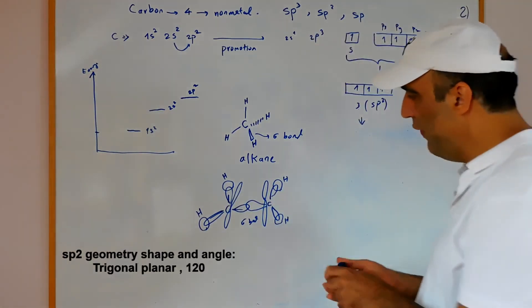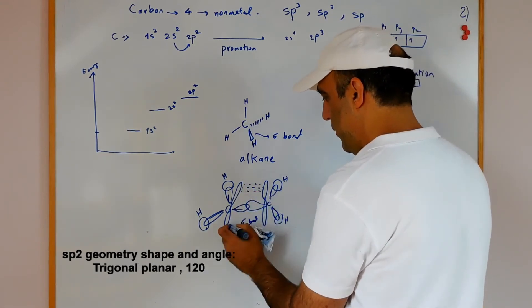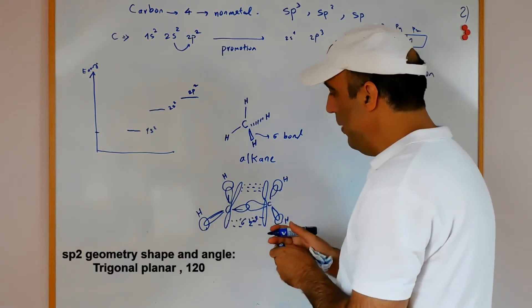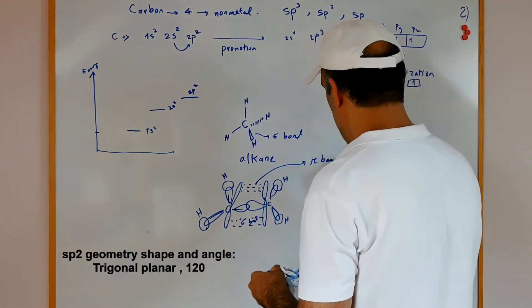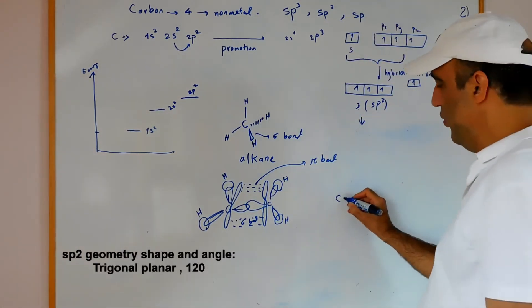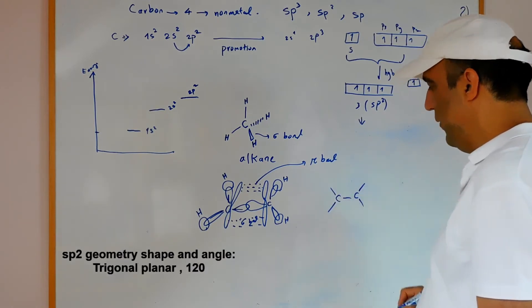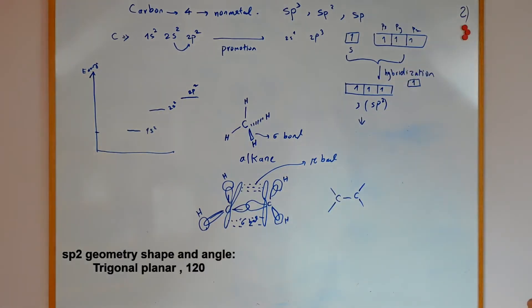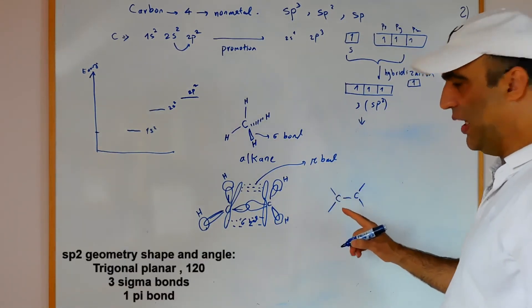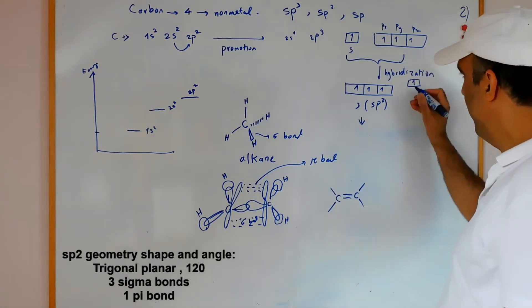The pz orbitals remain here and here. They can overlap and make a pi bond. For example, ethylene - when we have carbon with three sp2 orbitals, it can make three sigma bonds and the last one with the overlap of pure p we can make a pi bond.